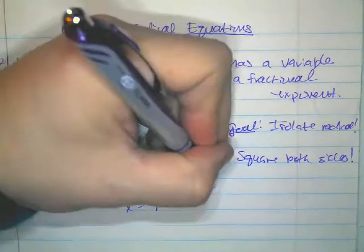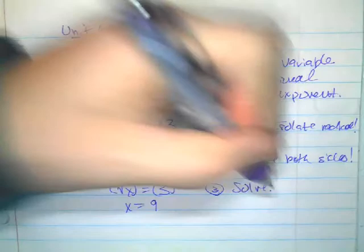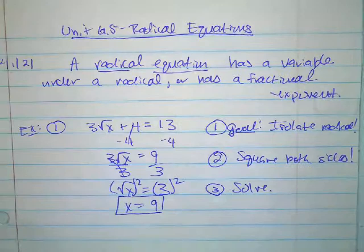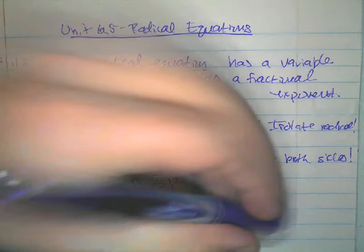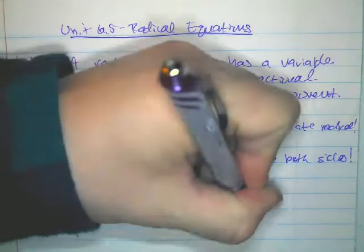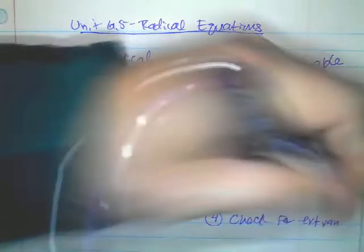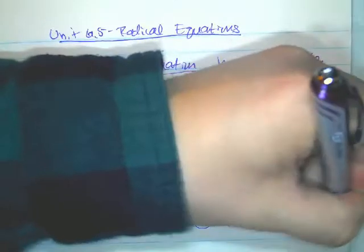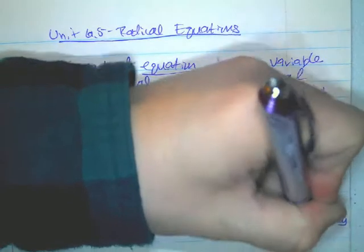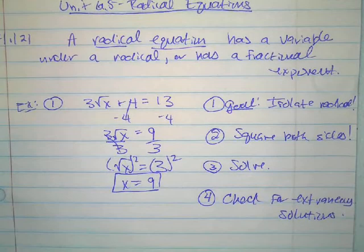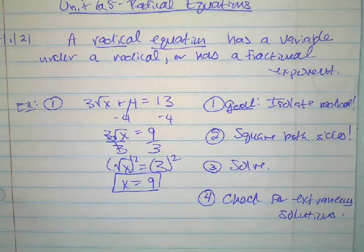Your third step is to solve — there's nothing further to solve here, so x equals 9. Whenever you square both sides of an equation, your last step is to check for extraneous solutions. Anytime you solve an equation and you squared both sides, there's a chance the solution becomes extraneous, so we need to check that it is not.